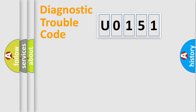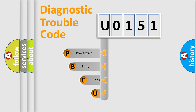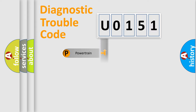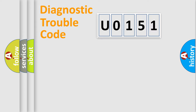First, let's look at the history of diagnostic fault code composition according to the OBD-II protocol, which is unified for all automakers since 2000. We divide the electric system of the automobile into four basic units: Powertrain, Body, Chassis, and Network.